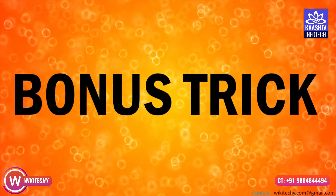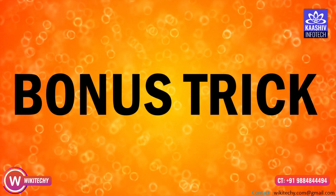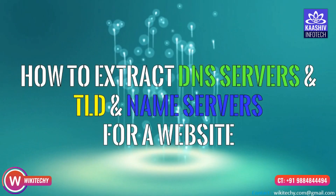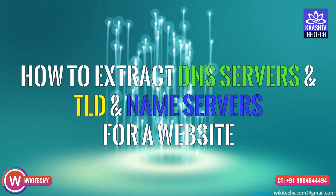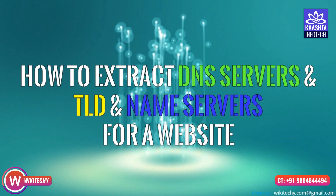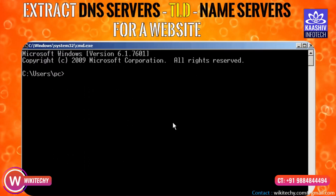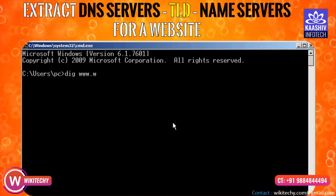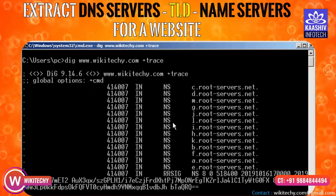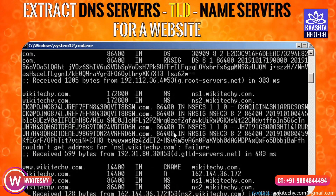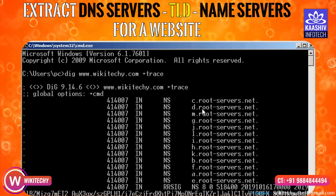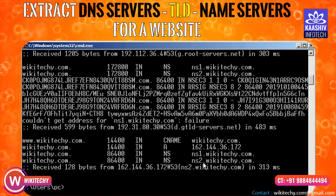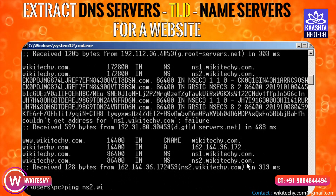Now we are going to talk about the bonus trick - in-depth information. The information we are going to cover includes DNS servers, TLD servers, web servers, name servers, etc. We are going to extract this for educational purposes using the Digginder tool. We are going to add additional commands including traceroute, which gives name server and other information. We extract it.